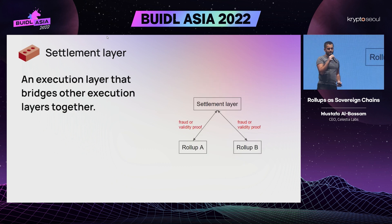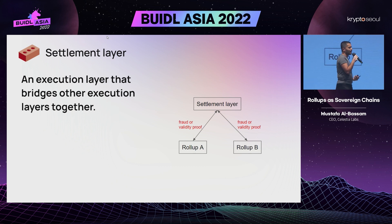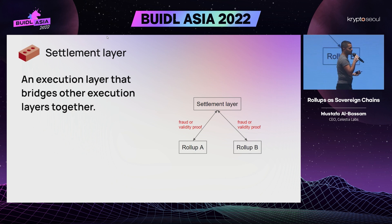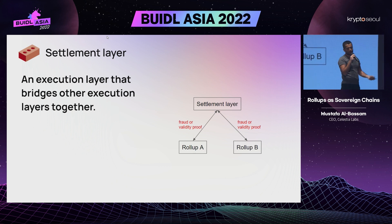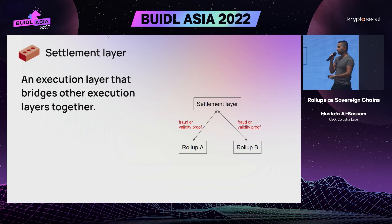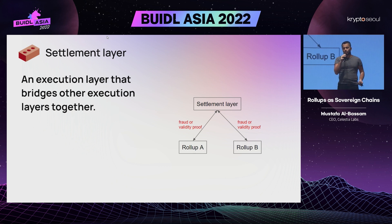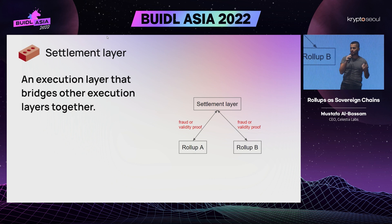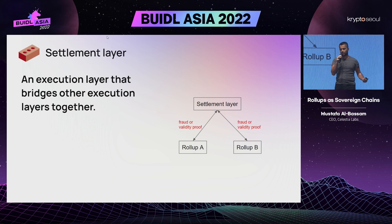And finally, you've got settlement. In my talk, what I mean by settlement is basically a special case of an execution layer that provides a bridge between other rollups. So if you've got rollup A and rollup B, the settlement layer basically provides a kind of hub where those rollups can post their headers and their fraud and ZK proofs, so that those rollups can send assets between each other via this settlement layer.